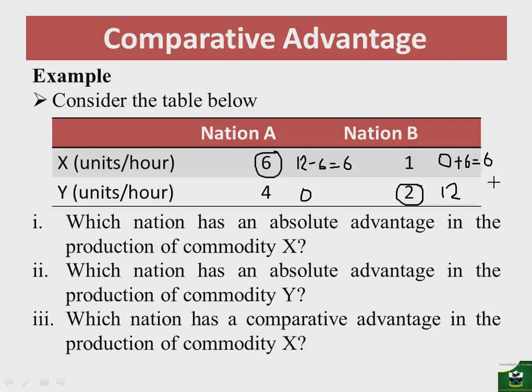For commodity Y, since nation A is exporting six X and importing six Y, we add the six units of Y being imported, giving nation A a total of six units of Y. For nation B, we subtract the six units exported to nation A, so nation B remains with six units of Y.